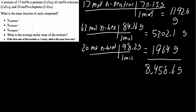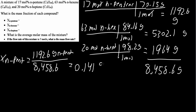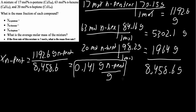We want mass fraction. Mass fraction deals with grams, milligrams, or kilograms. We know each individual component and the total, so we can easily calculate it. The mass fraction of n-pentene, x_pentene, is 1192.6 grams of n-pentene divided by the total mixture mass of 8458.6, which gives us 0.141 grams of n-pentene per gram of mixture.